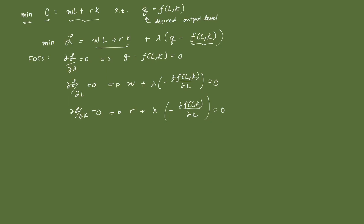We have the first first-order condition, the second, and the third. What we're going to do here is equate lambda equals lambda. So we're going to use conditions 2 and 3, and manipulate them by isolating out lambda.